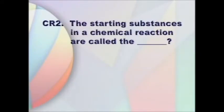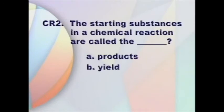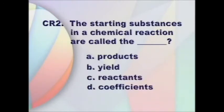Cumulative review question number two: the starting substances in a chemical reaction are called the — A, products. B, yield. C, reactants. D, coefficients.